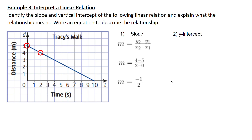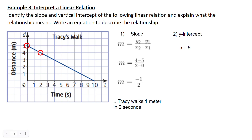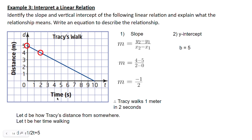A slope of negative one half is decreasing but relatively flat — not as flat as 0, but not as steep as 1. The y-intercept is 5. The slope tells us Tracy walks 1 meter in 2 seconds, and her distance is decreasing over time. This could mean she is 5 meters away from somewhere and as she walks, she gets closer to it. Letting D be her distance and T be her time walking, we get D equals negative one half T plus 5.